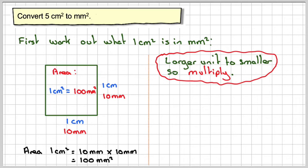We've got 5 centimeters squared, and that's going to be equal to 5 times the conversion rate, which is 100, which will give us 500 millimeters squared.